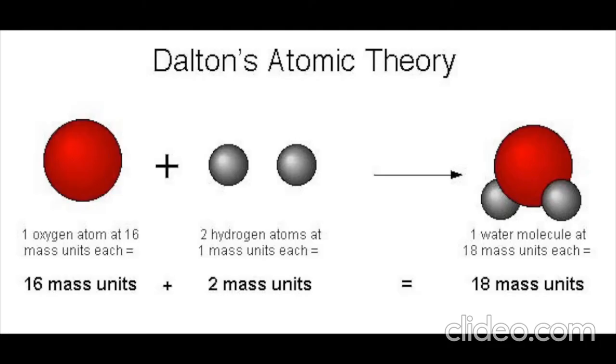This explanation is: 1. All matter is composed of extremely small particles called atoms. 2. Atoms of a given element are identical in size, mass, and other properties. Atoms of different elements differ in size, mass, and other properties. 3. Atoms cannot be subdivided, created, or destroyed.